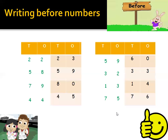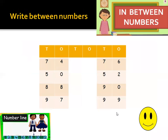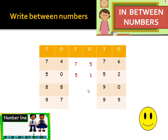Now let's move towards the next: between numbers. Here two numbers are given: 74 and 76. Which number will come in between 74 and 76? Can you guess? Yes, it's 75. Next is 50 and 52. After 50 and before 52, which number will be there in between? Correct, it's 51. Next is 88 and 90. After 88 and before 90, here comes 89.